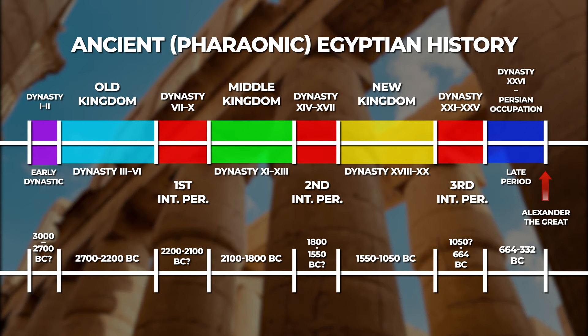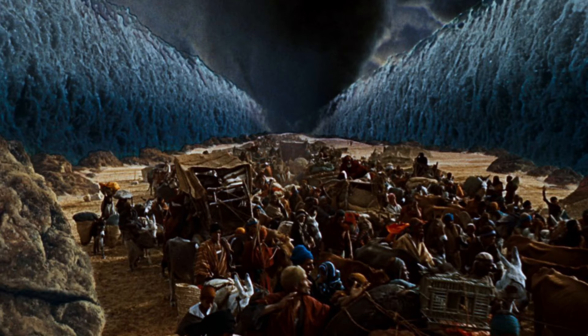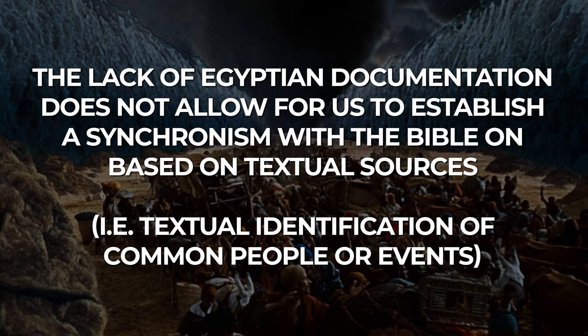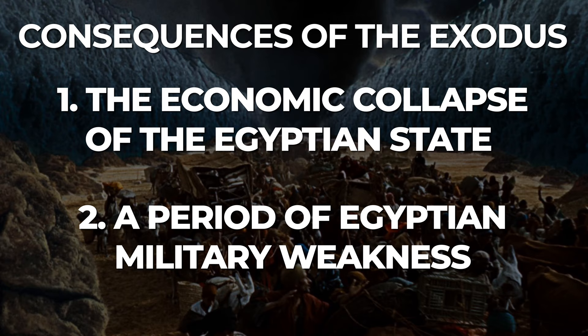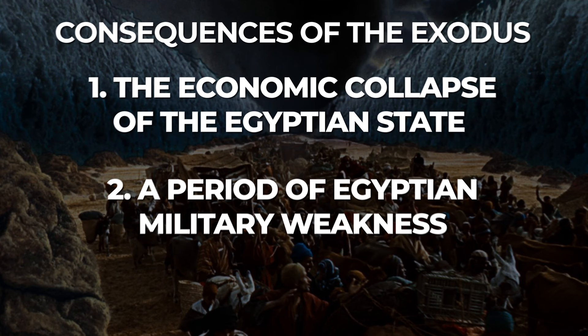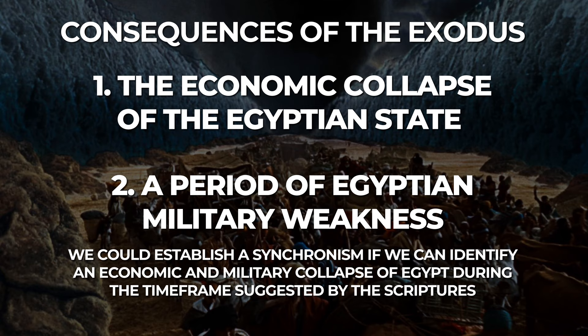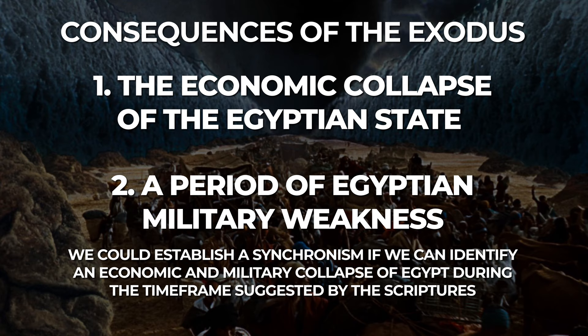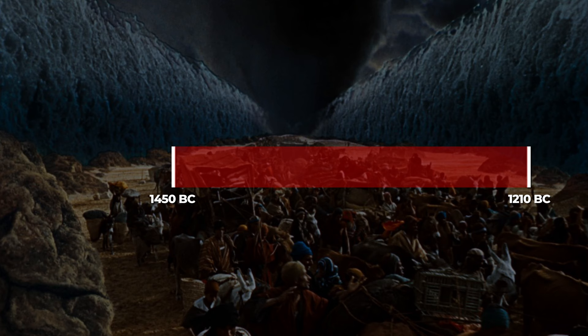Returning to the Exodus specifically, the lack of Egyptian documentation does not allow for us to establish a synchronism with the Bible on textual grounds. However, recognizing the inevitable consequences of the Exodus, if the Bible's testimony is to be taken seriously, we could establish a synchronism and, by extension, a fixed date if we can identify an economic and military collapse of Egypt during the timeframe suggested by the scriptures. Thus, a rather simple solution presents itself: take the earliest possible date and the latest possible date and look for a time when Egypt experienced both economic and military collapse.